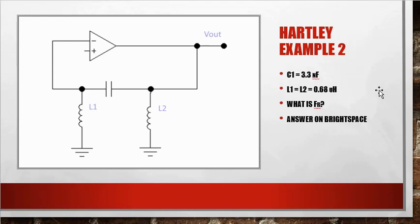Hartley example two. Capacitor one is 3.3 nanofarad. L1 equals L2, which is 0.68 microhenry. What is the frequency of resonance? And the answer is on Brightspace for you to check.